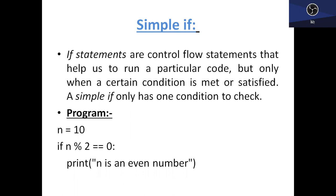Next is the simple if statement. The if statement is a control flow statement. If that particular condition is true, then that part will process; otherwise, it will be skipped by the interpreter. It helps us run a particular code only when a certain condition is met or satisfied. A simple if has only one condition to check. For example, if n is equal to 10, and we write 'if n modulus 2 == 0' — modulus means the remainder value — if the remainder when dividing by 2 is 0, it will go to the print statement.